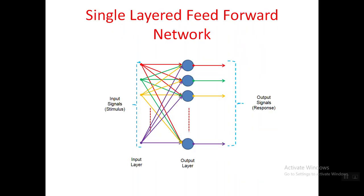In a single-layered feed forward network there are two layers — input layer and output layer — but we still call it single-layered. In the input layer, the items are called input nodes rather than neurons because no computation happens there; they simply carry information from sensory organs or other neurons.